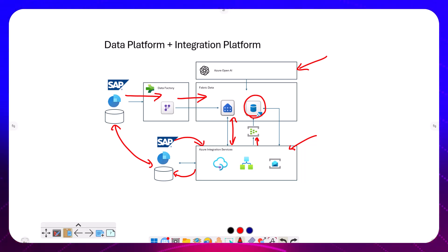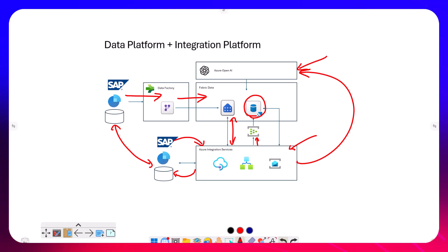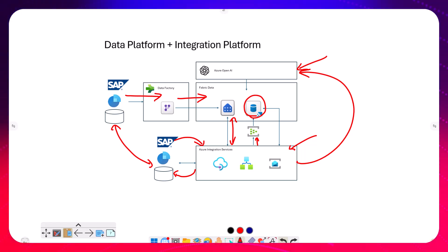The other thing is that as we take it further, the AI is using data from your data platform that your integration platform put in. But also, your integration platform can use AI directly as part of a business process orchestration — where it can use AI to help decide what to do with stuff and how to transform processes. There are a lot of great opportunities that open up the minute you throw Azure Integration into the mix.